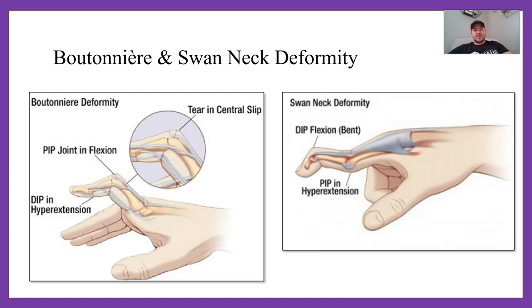In a boutonniere deformity, you have flexion of the PIP joint and hyperextension of the DIP joint. In a swan neck deformity, that's flipped — you have flexion of the DIP and extension of the PIP. Two things to understand there.